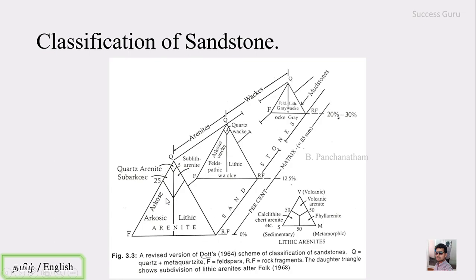If the percentage of feldspar and quartz are nearly equal, then it is called arkose. If the feldspar percentage rises further, it is called arkosic arenite. If the rock fragment percentage rises to more than 50 percent or so, then it is called lithic arenite. This classification applies to matrix percentage of 0 to 12.5.